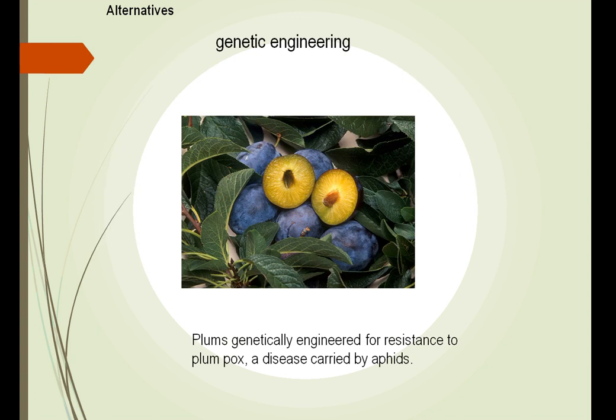Another alternative is genetic engineering. Plums, for example, used to be decimated by the plum pox, a disease carried by aphids. We've changed that genetically, and now there is resistance to the aphids. We almost didn't have tomatoes either — it became too expensive to handpick them. As the price rose, genetic engineering developed a coating that made the skin more resistant to touch, so now we can use machines to pick tomatoes at a cheaper price.